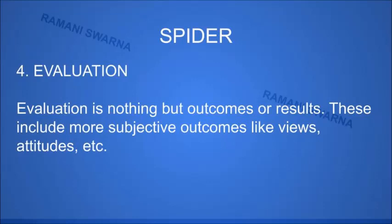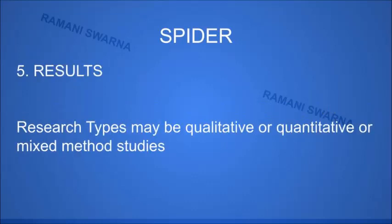The second component is PI — Phenomena of Interest. In majority of cases, this includes what we call behaviors, experiences, and interventions sometimes. It is totally up to us what exactly we would like to take up in our own research question. The third component is Design, which is the most popular one, and we have seen the effect on the strength of the analysis of the study.